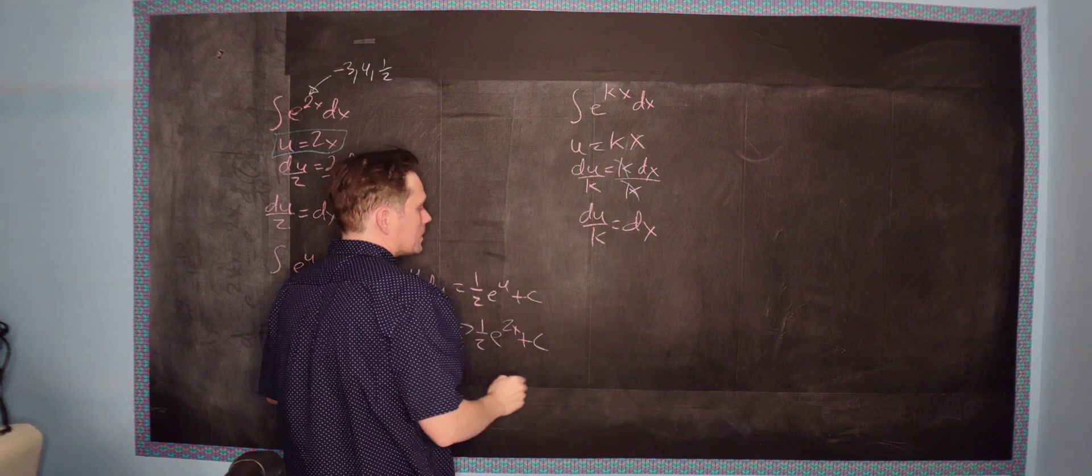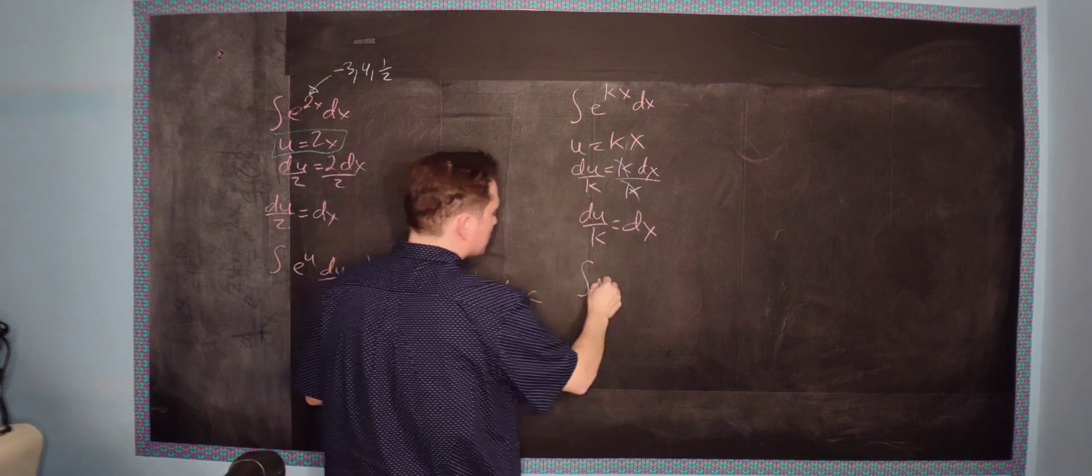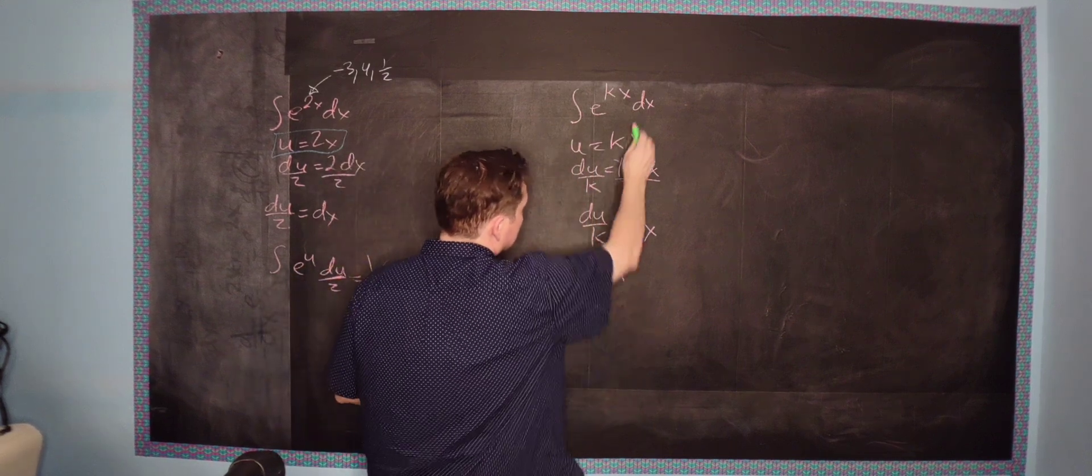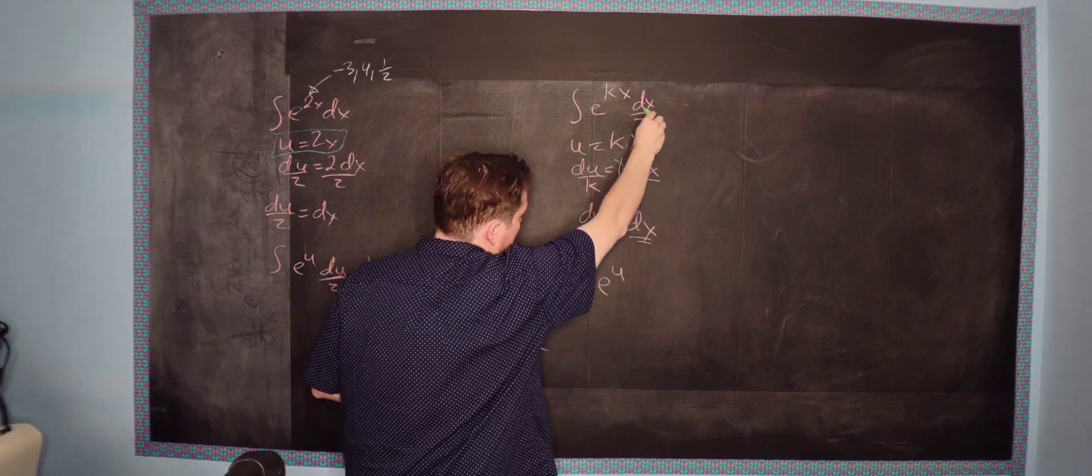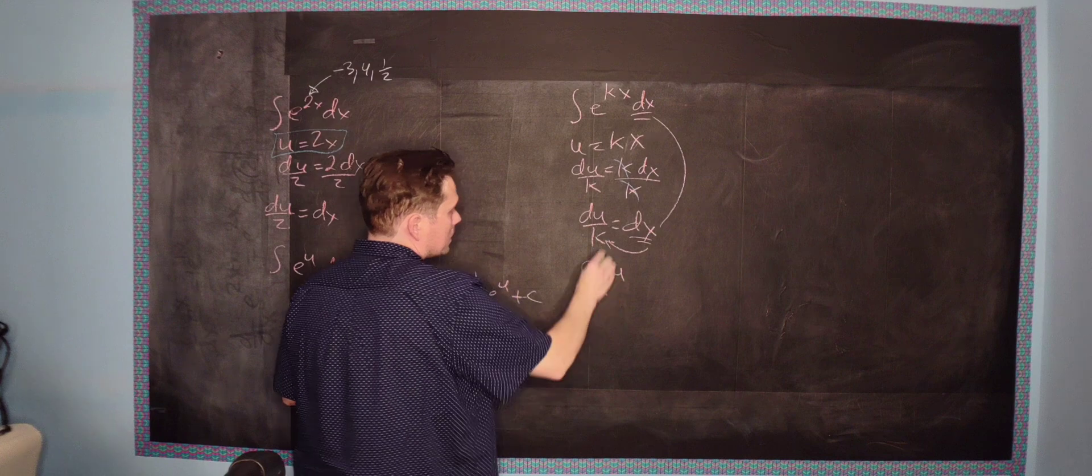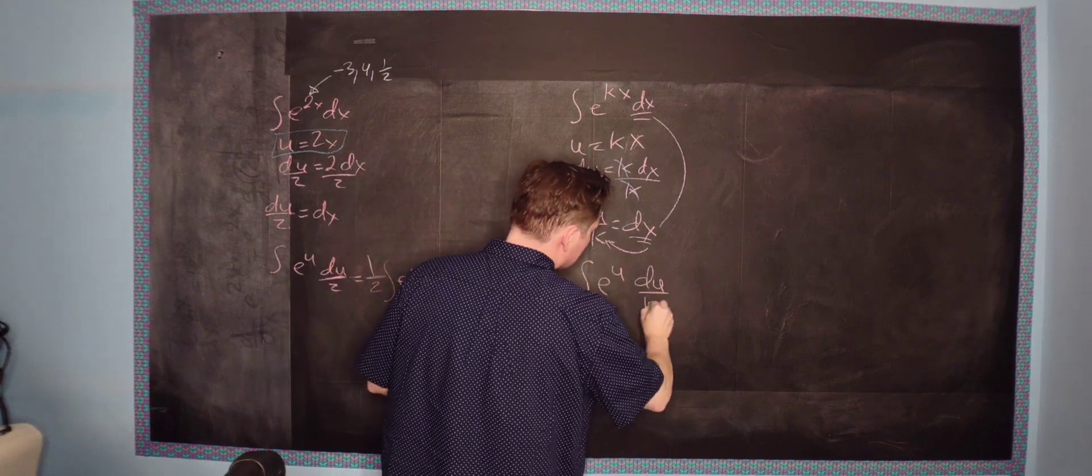And now you have that du over k is equal to dx. Now we can recreate things. So in other words, now we have e to the u. And again, dx is equivalent to du over k from here. From here and then here.